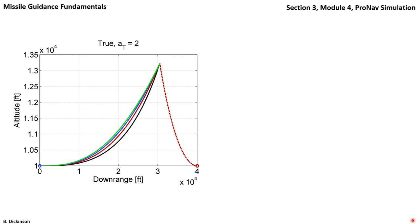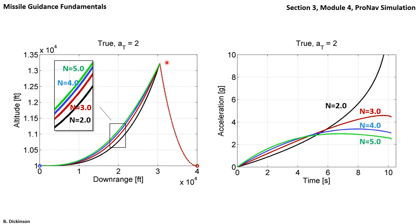Here are the trajectories for four different values of N for true pronav. We can see that the highest value of N gives the tightest turn radius and the shortest distance traveled to the target. On the right-hand side is the acceleration commanded by the true pronav law. We've already looked at the case for N equals 3. For N equals 4 and 5, the acceleration laid on in the engagement decreases. But early on, a slightly larger acceleration is required.